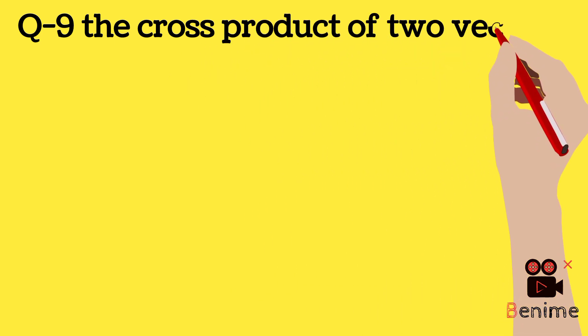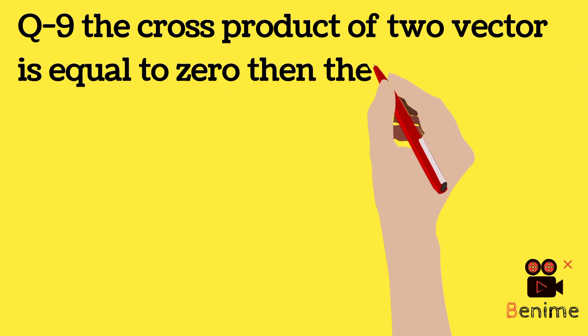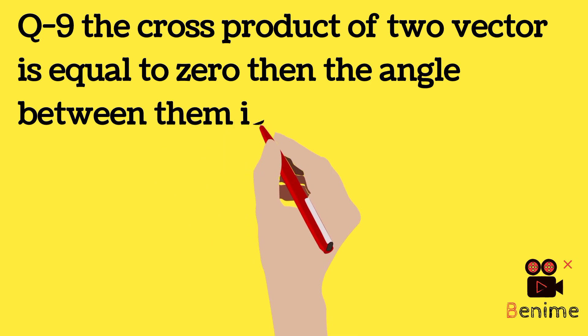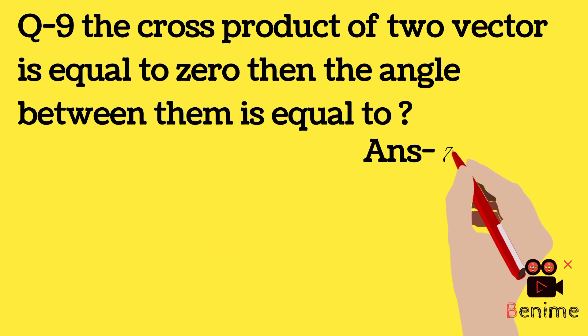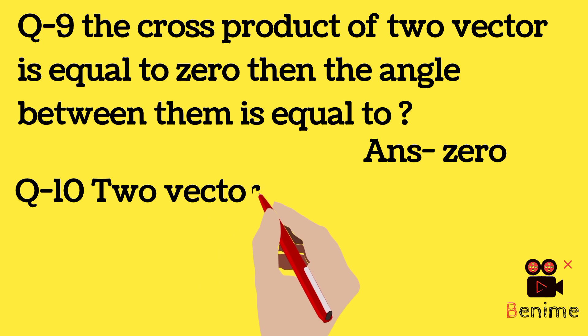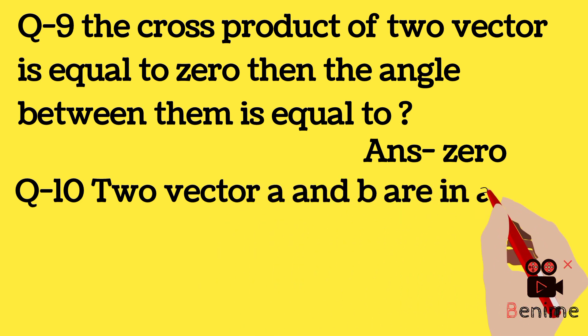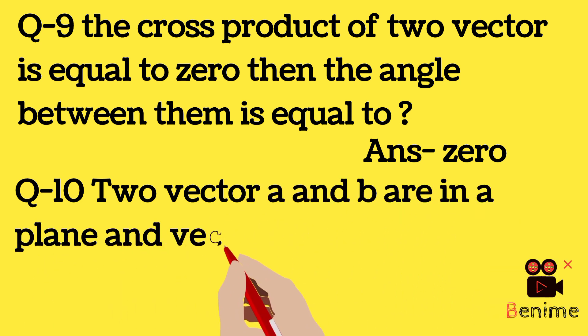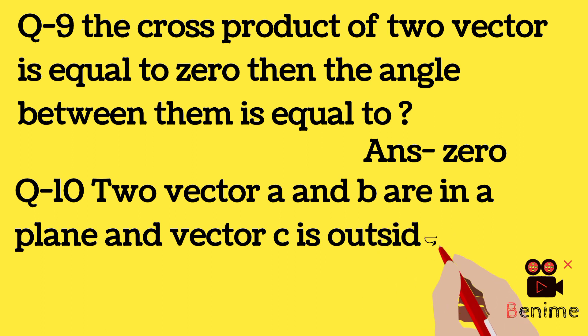The cross product of two vectors is equal to zero, then the angle between them is equal to zero.